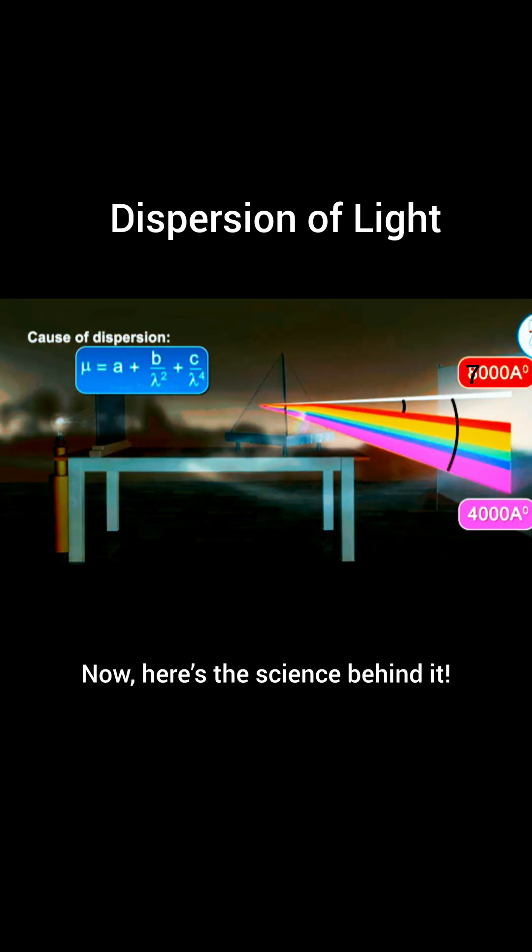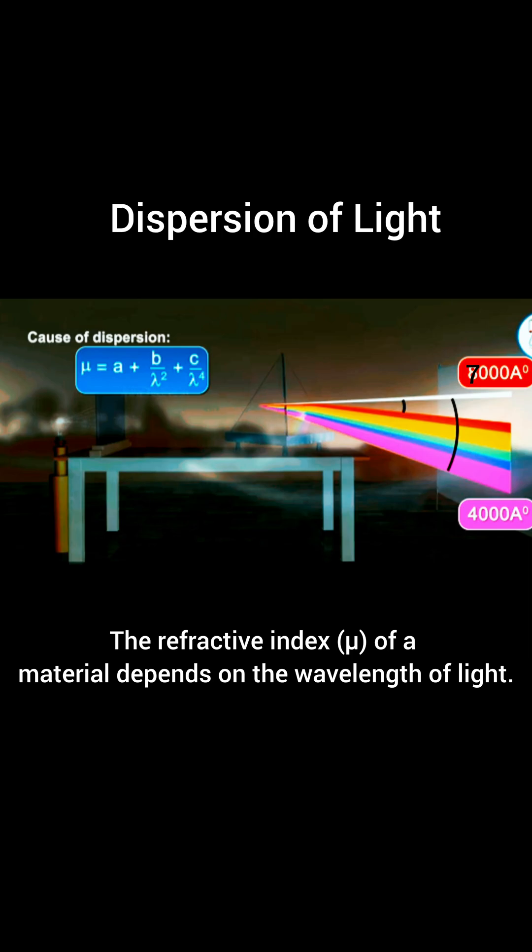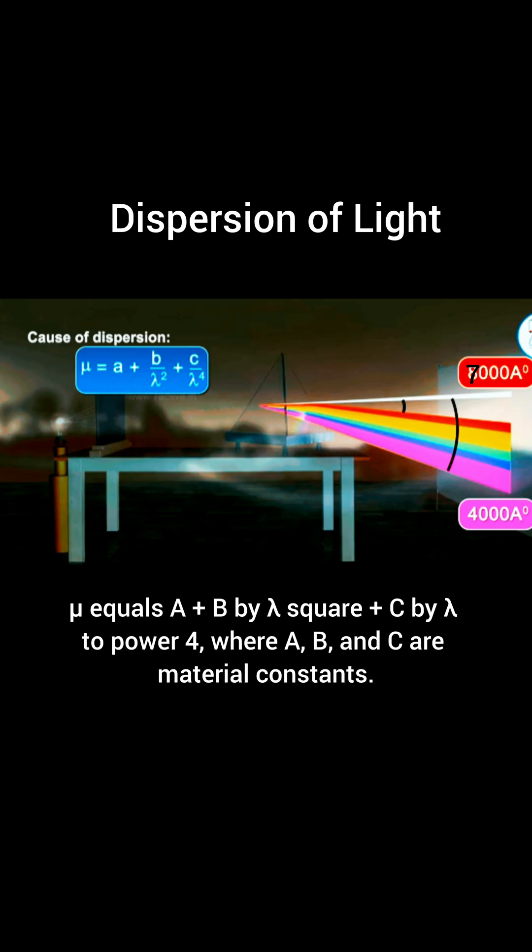Now, here's the science behind it. The refractive index, μ, of a material depends on the wavelength of light. It follows this formula: μ equals A plus B by λ square plus C by λ to power 4, where A, B, and C are material constants.